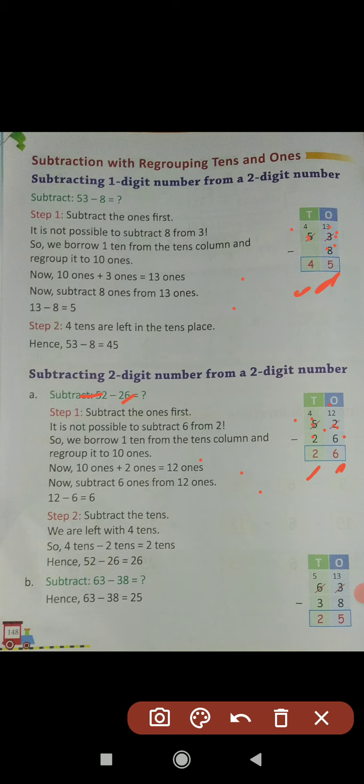Next example: subtract 63 minus 38. In the ones place column we have 3 and 8. Again we have to take 1 borrow from 6 in the tens place. When we take 1 borrow from 6, this 6 converts into 5 (6 minus 1 equals 5), and this 3 converts into 13. 13 minus 8 equals 5, and 5 minus 3 equals 2. Answer is 25. Hence 63 minus 38 equals 25. I hope you are understanding how to subtract with regrouping.